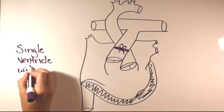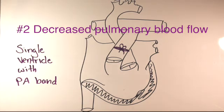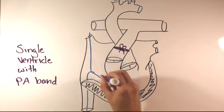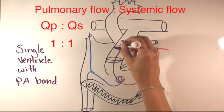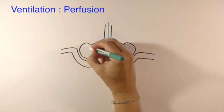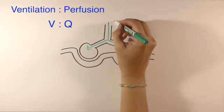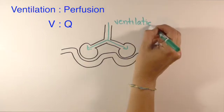So reason number two is exacerbated VQ mismatch from pulmonary hypoperfusion. Ideally, the ratio of blood flow to the lungs and blood flow to the body from the heart is 1 to 1. This is the QP to QS ratio. The ventilation to perfusion ratio, abbreviated VQ, is the ratio of air that reaches the alveoli and blood that makes it to the pulmonary capillaries.